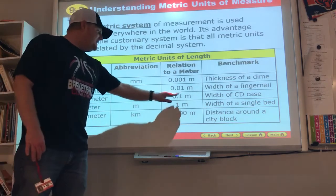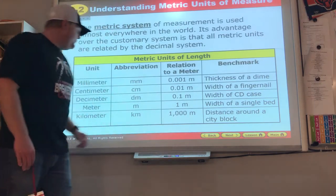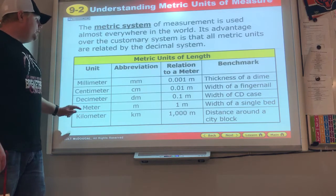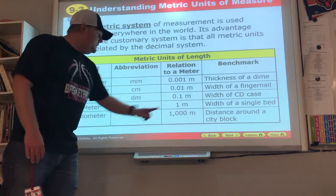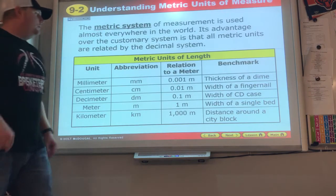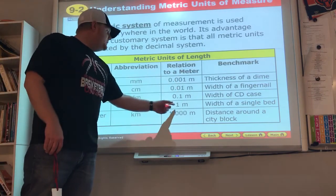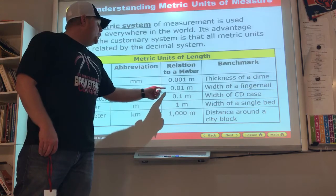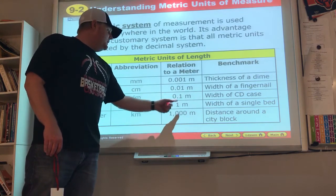Decimeter: one-tenth of a meter. Kilometer: that means there's 1,000 meters. Those are things we need to think about. 1,000 of these makes one of those. 100 of these makes one of those. Ten of these makes one of those. 1,000 of these makes one kilometer.